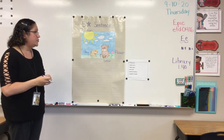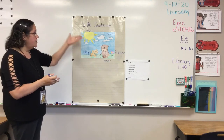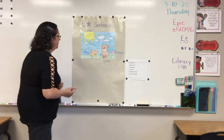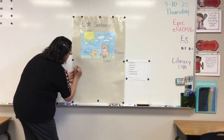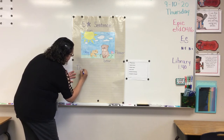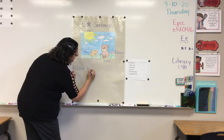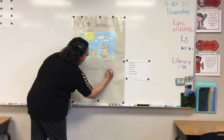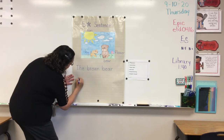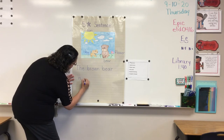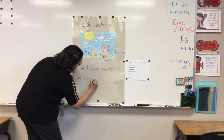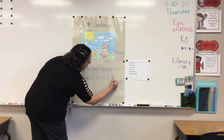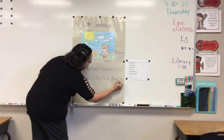Once I have labeled my picture, then I am ready to write a sentence using one of the words from my labels. This time I'm going to use the bear. And I'm going to write: the brown bear is next to the dog. And that's the end of my sentence.